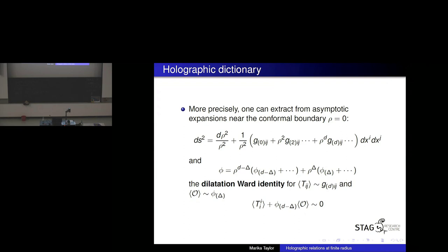One picks up the expectation value of the deforming operator in terms of the normalizable mode. There's a relationship between them — a dilatation Ward identity. This Ward identity captures that we have a conformal theory deformed by a source for an operator O. If this term weren't here, you'd have a traceless stress tensor, indicating a conformal theory. The tilde indicates quantum conformal anomalies, and the additional term tells us we've switched on a source — that's what we do to describe our RG flow.